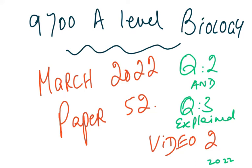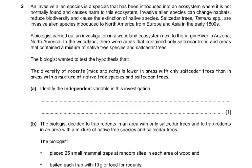Bismillahirrahmanirrahim. This is the 9700 A-level biology, March 2022, paper 5, question 2. This is the second video which explains questions 2 and 3. In the first video we covered question number 1, and in this second video I am going to be handling questions 2 and 3.